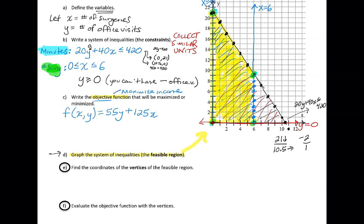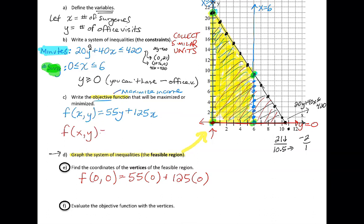For instance, let's do an easy one like (0, 0). You compute F(0, 0): that's 55 times 0 plus 125 times 0. It may be helpful to rewrite the objective function as 125x plus 55y, where x is the first coordinate and y is the second. Evaluating at (0, 0) gives $0. Hopefully that makes sense — if no surgeries are scheduled and no office visits, you're not going to make any money. That's not going to maximize anything.